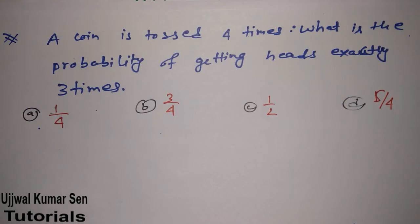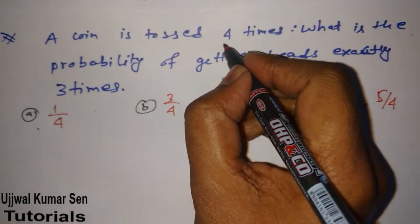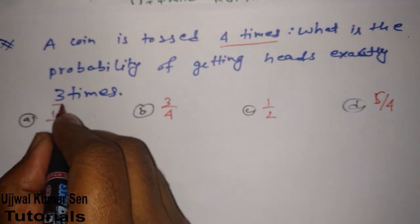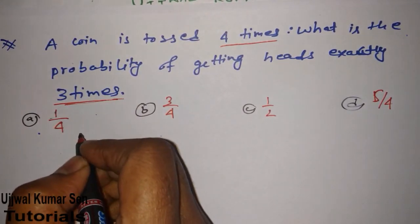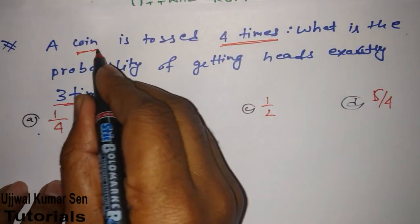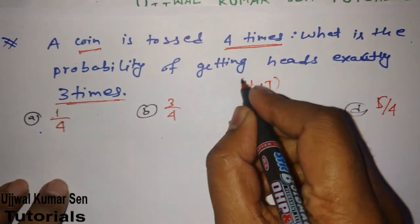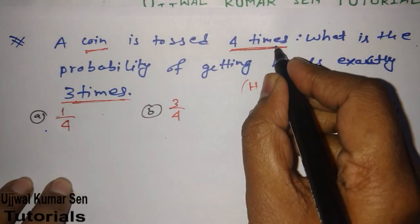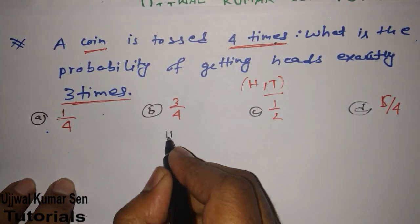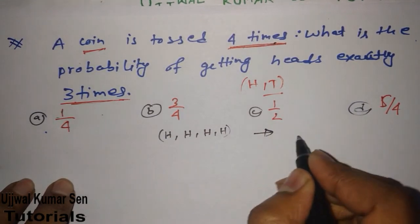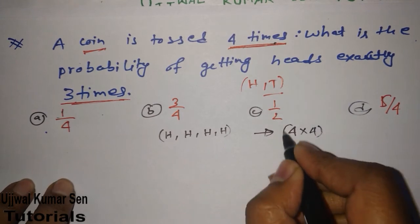In the first question, a coin is tossed four times — that is important. What is the probability of getting heads exactly three times? The coin has either head or tail, so if we are talking about four tosses, the sample space would be like head-head-head-head, tail, and all combinations.